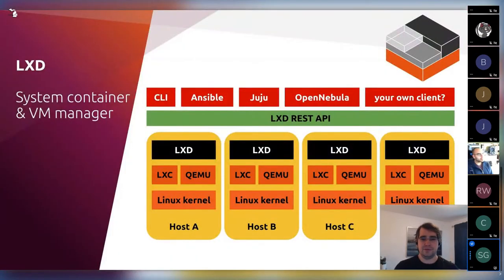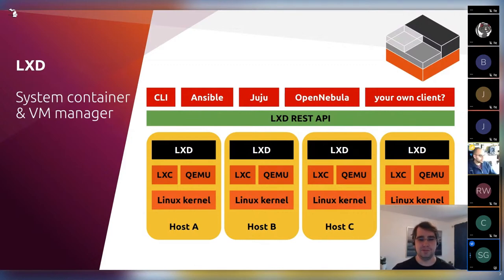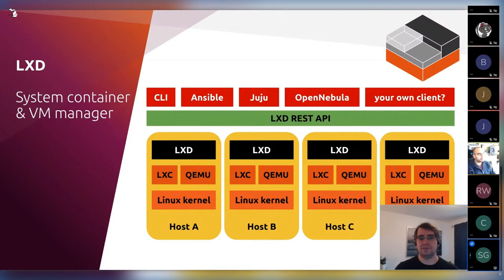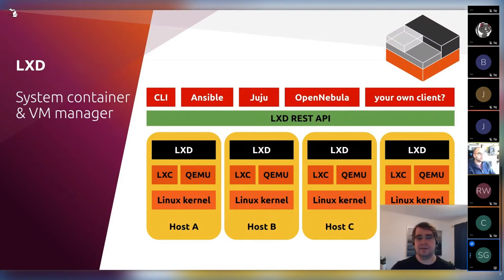LXD directly supports a whole variety of storage and network options, as well as a bunch of device pass-through — you can attach whatever you want to any container. LXD is implemented in Go; it uses LibLXC for containers and QEMU for virtual machines, exposing a REST API to clients. Clients include Ansible, OpenNebula, Juju, Puppet, and a whole bunch of others that talk to the LXD API to manage systems.